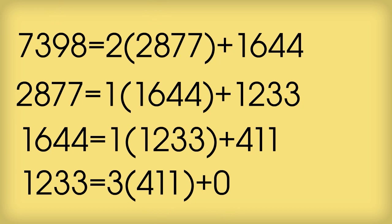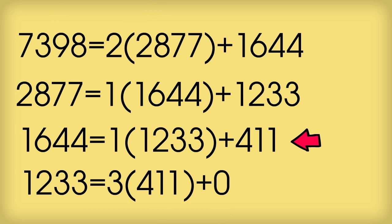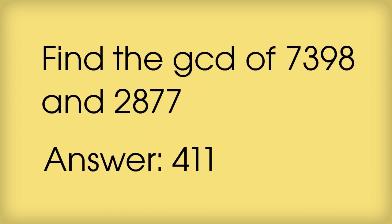Now normally people will argue it slightly differently. They'll say the remainders get lower and lower until you get to the last non-zero remainder. So they'll tend to focus on the second last line where we had 411. And they'll say then that 411 is the GCD. So the answer to our problem is 411.